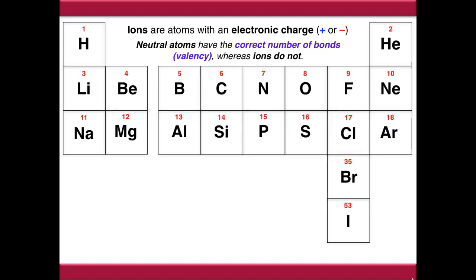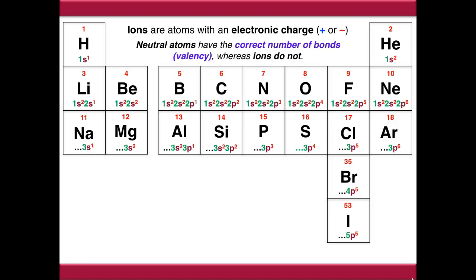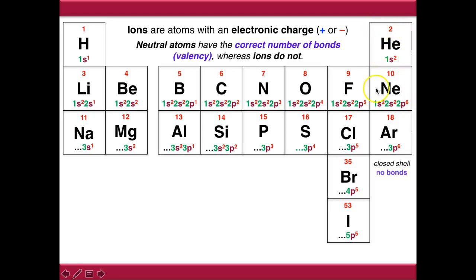If we look at the periodic table, we can see by looking at the outer shell electron configurations that everything on the right-hand side - all the noble gases - have a closed shell configuration. They are perfectly happy, they have no desire to make any bonds, and as a result they're chemically unreactive. So achieving this closed shell configuration is what atoms will generally try to do.